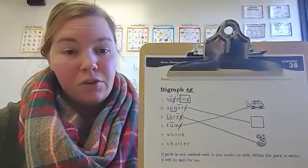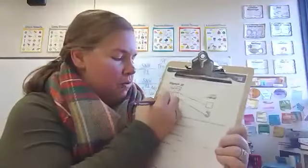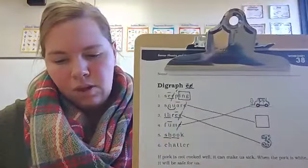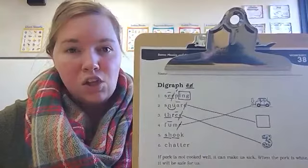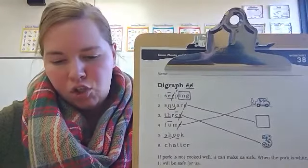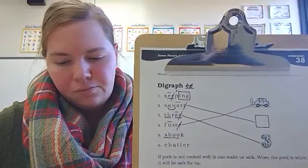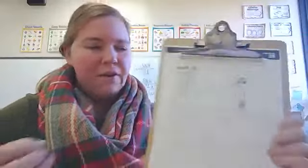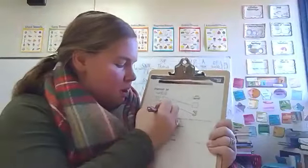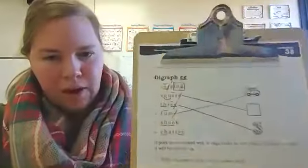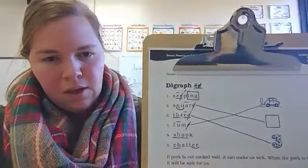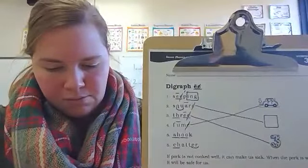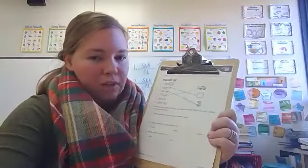Number five has two digraphs — digraph S-H and digraph O-O. Number five says shook. We have a lot of coding for number six. First, we're going to start with digraph C-H, then combination E-R. Underline the digraph, put an arc underneath the combination. This word is chapter.